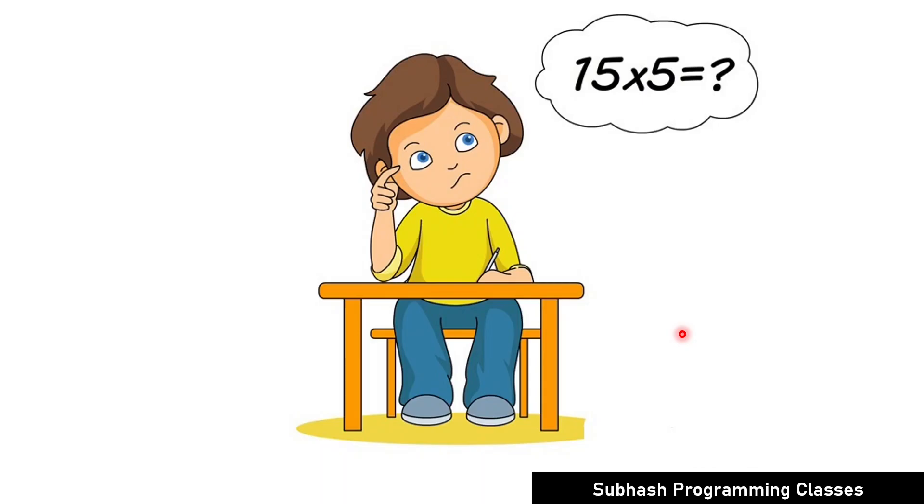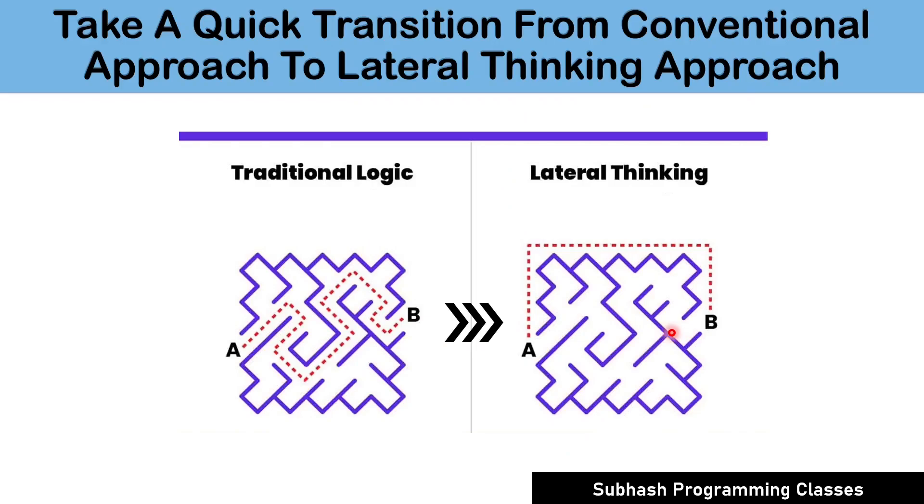I also know that I have told you in an earlier lesson that initially you can start with conventional approaches and slowly you can start adopting lateral thinking methods. But I want to tell you one more thing. How fast you can solve aptitude problems depends on how soon you can switch over to lateral thinking methodologies from conventional approaches. Therefore, as soon as possible, start adopting lateral thinking methodologies, my dear friends.